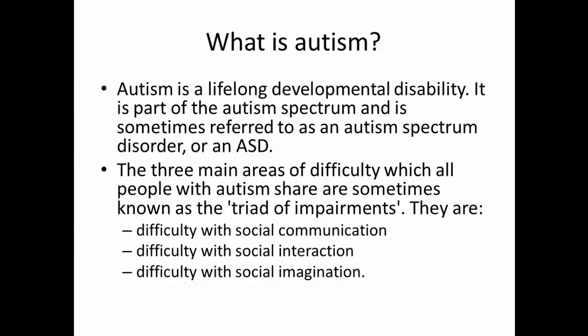The third difficulty is with social imagination, or lack of imaginative play. They may have difficulty with flexible thought, including difficulty imagining alternative outcomes and finding it hard to predict what will happen next. This can frequently lead to anxiety and can present as an obsession with rigid routines, with severe distress if routines are disrupted.